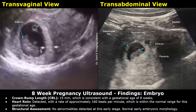Then you can write about the heart rate. In this case, it is detected with a rate of approximately 160 beats per minute, which is within the normal range for this gestational age. Structural assessment: no abnormalities detected at this early stage; normal early embryonic morphology.